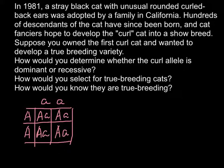So if this cat has two recessive alleles, that means when we cross it with another normal cat for this trait, all 100% of the progeny would be normal.